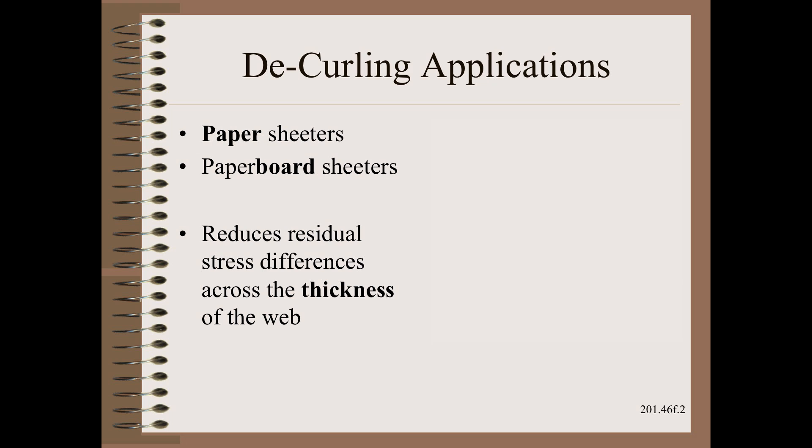There are perhaps 10,000 paper and paperboard sheeters in use. Many of them are equipped with decurl stations. Decurling is also possible on some other machines and some other webs.